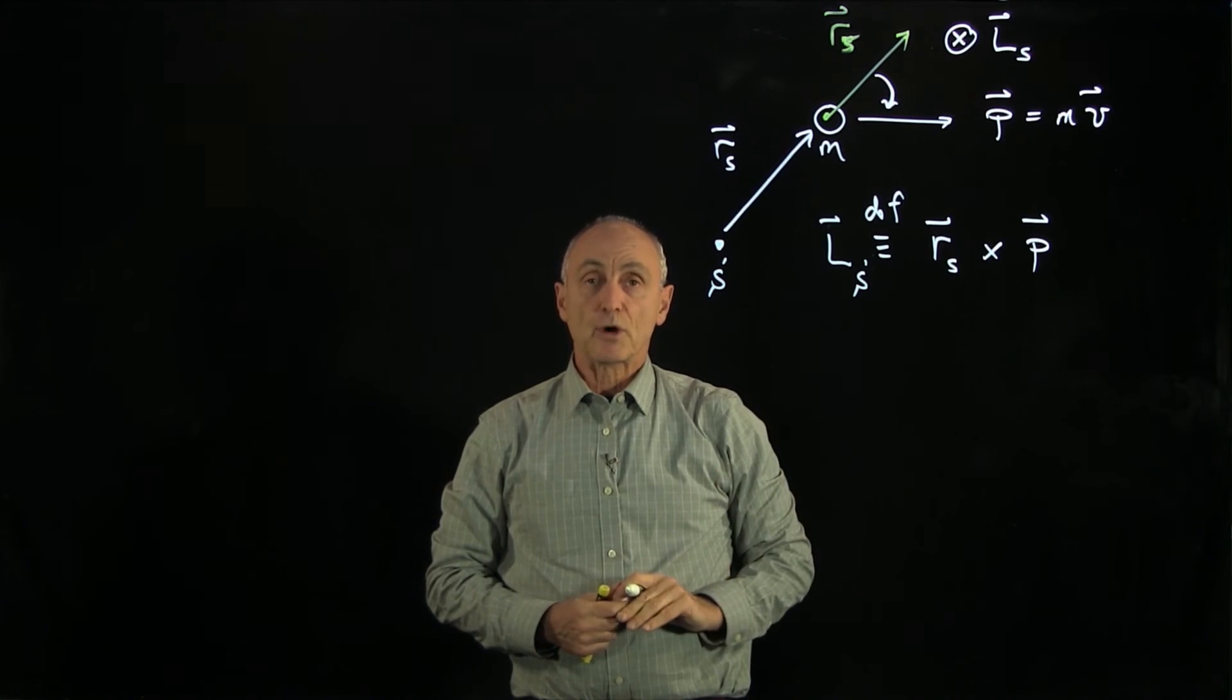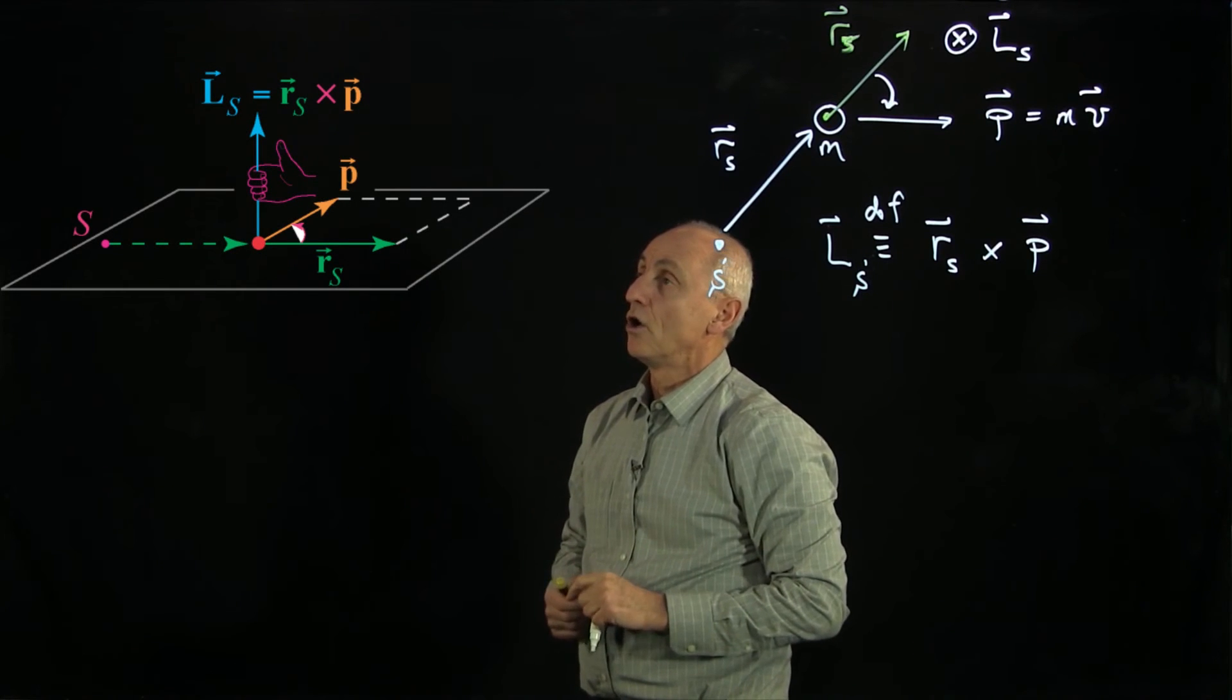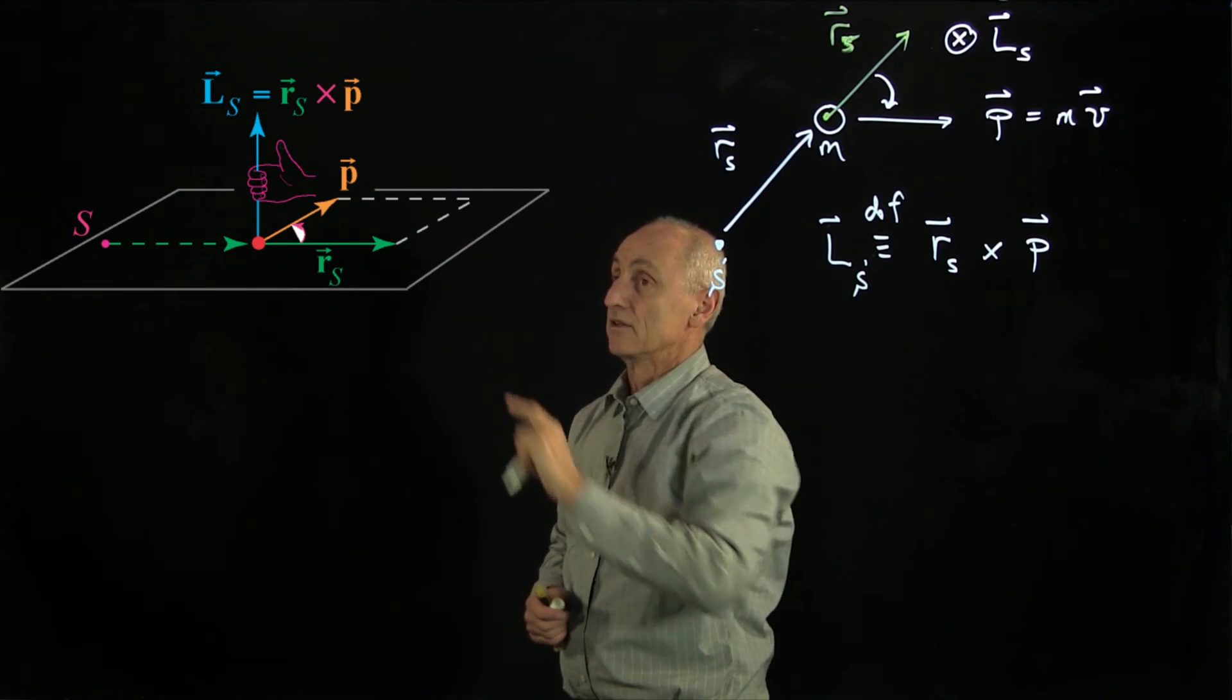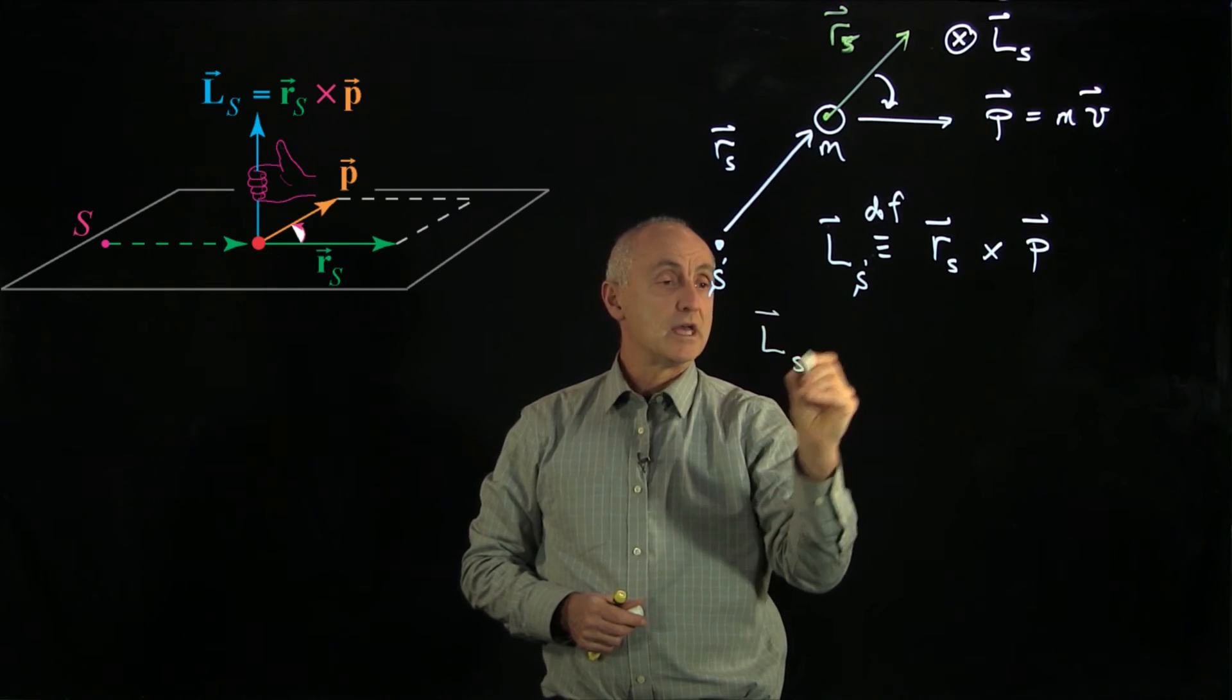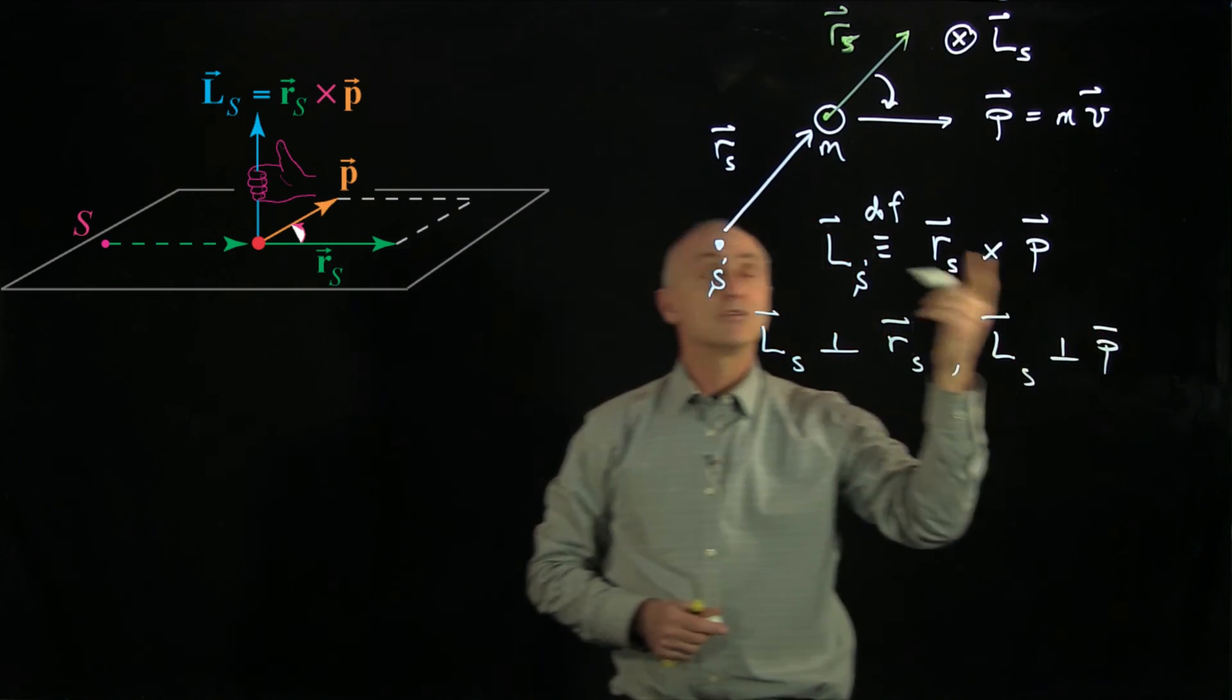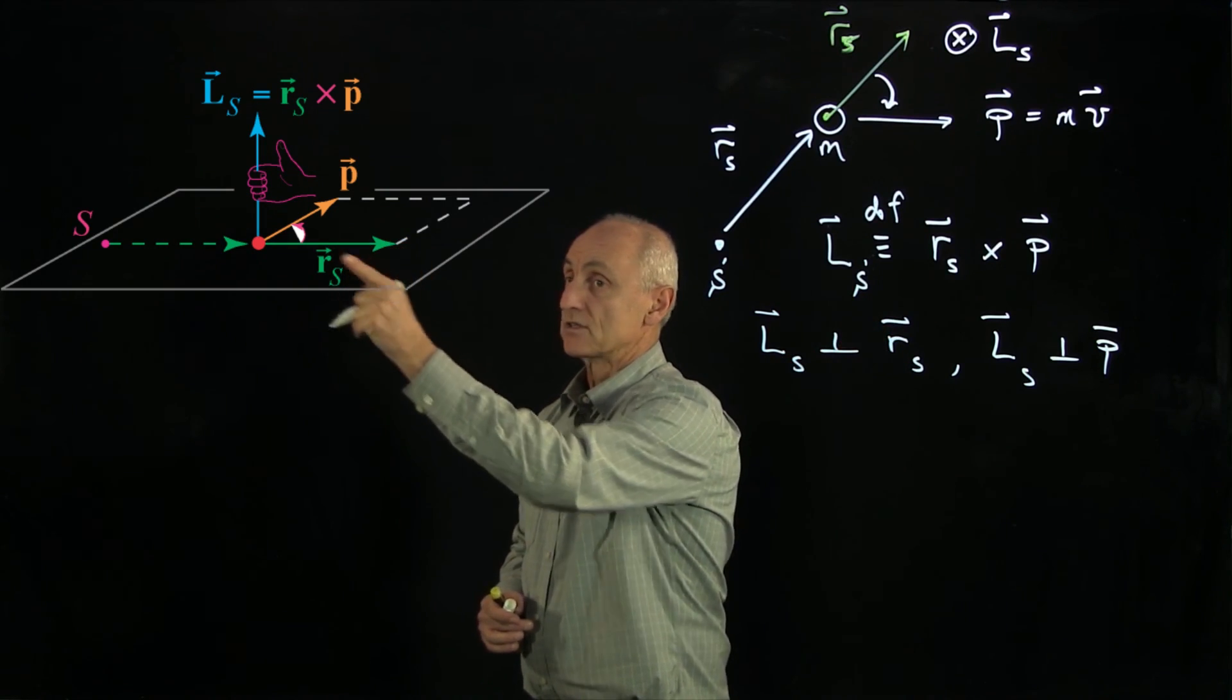Now we'll learn how to calculate this cross product in detail, but suppose we have our vectors which are in a slightly different arrangement as seen in this figure here. Well, what we see is with the vector p and the vector rs, we still use our right-hand rule to calculate the direction of ls. Notice whenever you have a vector cross product that the vector ls is perpendicular to both the vectors rs and is perpendicular to the vector p. And you can see in both of these examples that the angular momentum is perpendicular to the plane formed by the vectors rs and p.